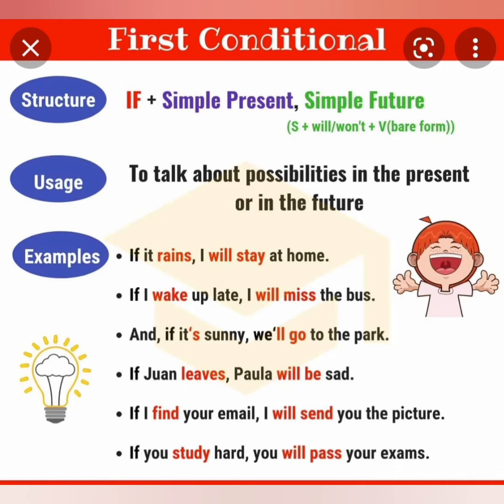The first conditional structure is: if plus simple present plus simple future — that is, will or won't plus base form — to talk about possibilities in the present or future. Examples: 'If you work hard, you will get first rank.' 'If it rains, I will stay at home.' 'If I wake up late, I will miss the bus.' 'If it is sunny, we will go to the park.'